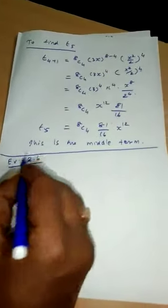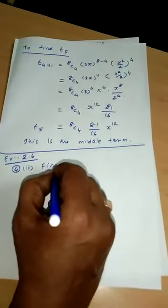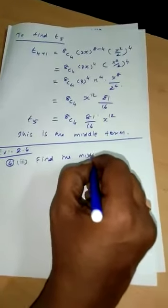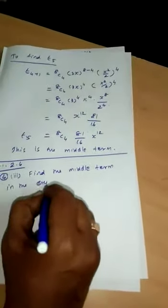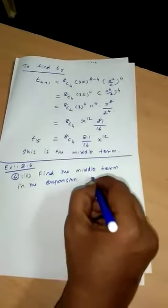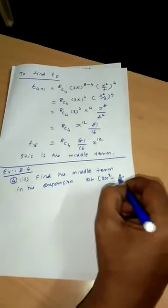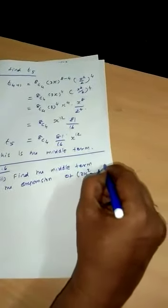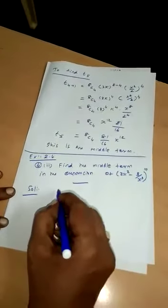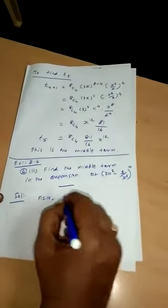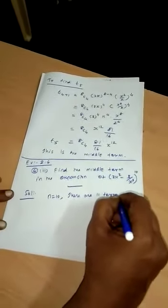Problem 2.6, third subdivision: Find the middle term in the expansion of (2x² - 3/x³)^10. Solution: here n is 10, so there are n+1 = 10+1 = 11 terms in this expansion.